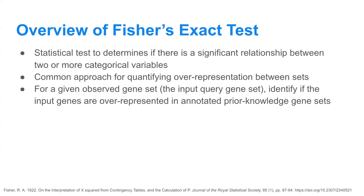An overview of Fisher's exact test: essentially this is a statistical test that determines if there is a significant relationship between two or more categorical variables. It's a pretty common approach for quantifying over-representation between sets. Note that while a GSEA algorithm requires a ranked gene list as input, Fisher's exact test works on an input gene set that is unranked. For a given observed query gene set, we want to identify if the input genes are over-represented in some prior knowledge gene set.